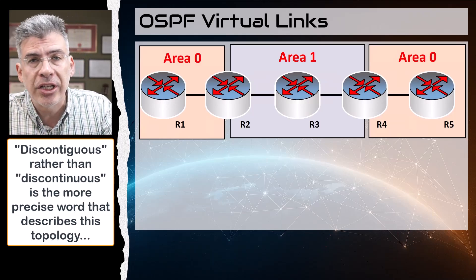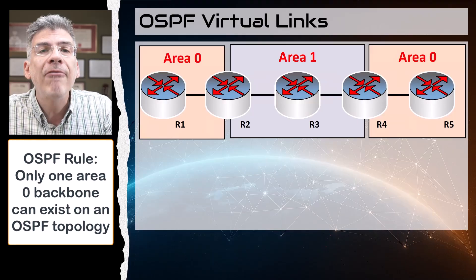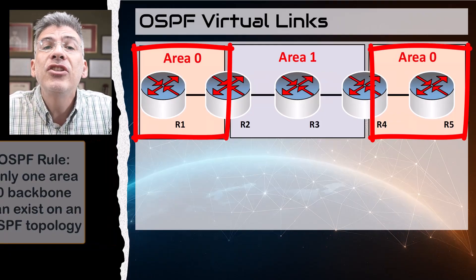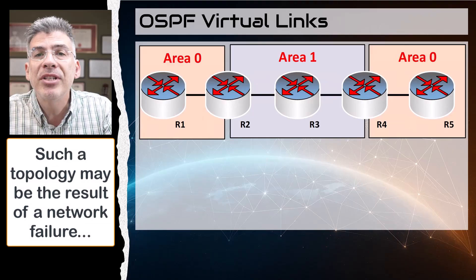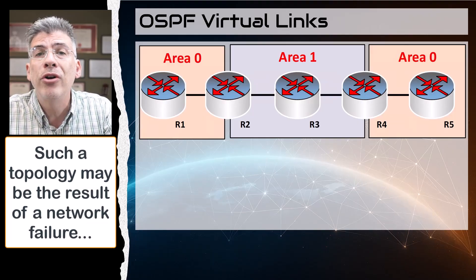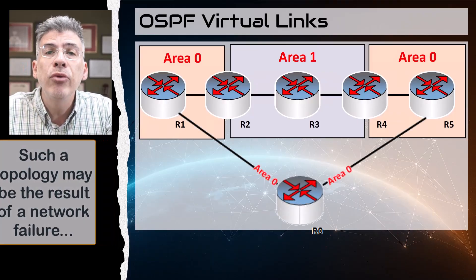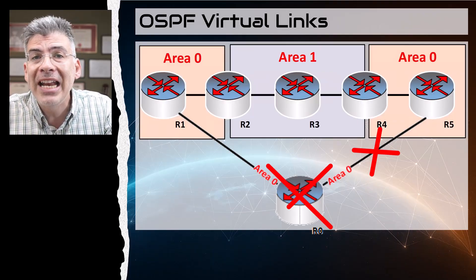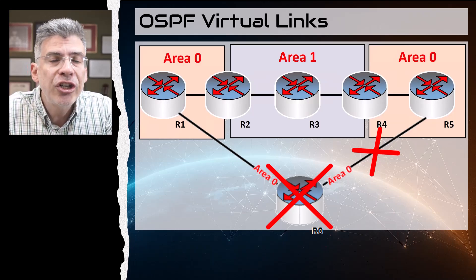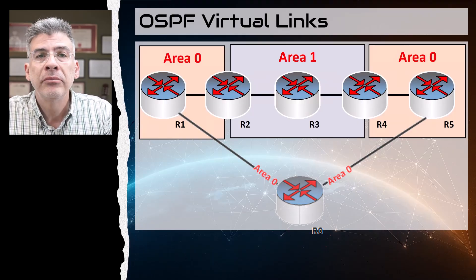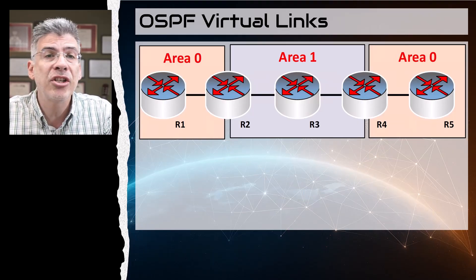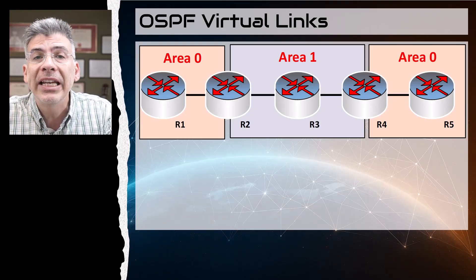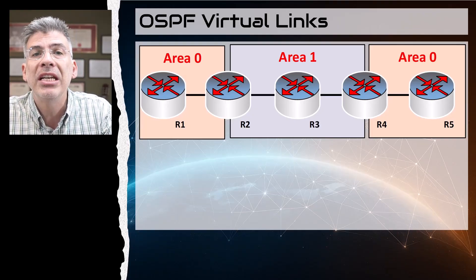Back to our topology. According to OSPF rules, you can only have one area zero in any OSPF topology. A discontiguous area zero is not allowed. But something like this may be a result of a failure of one or more OSPF routers within area zero — perhaps a fiber optic cable being cut or a major power outage at a data center — essentially unintentionally separating the backbone area into two.